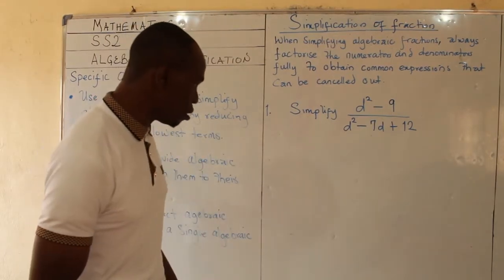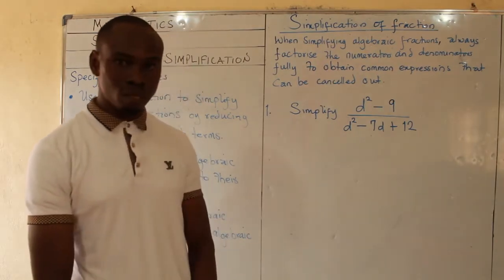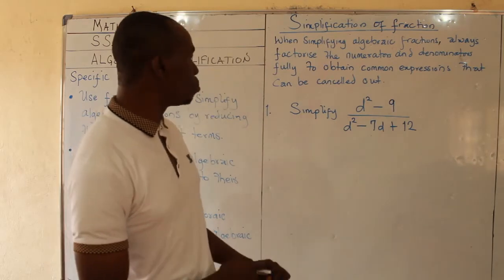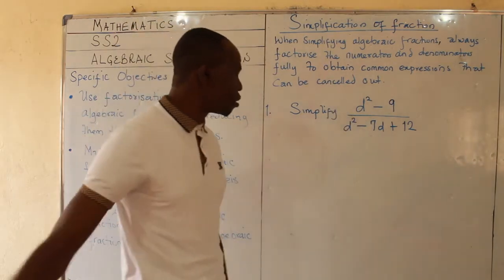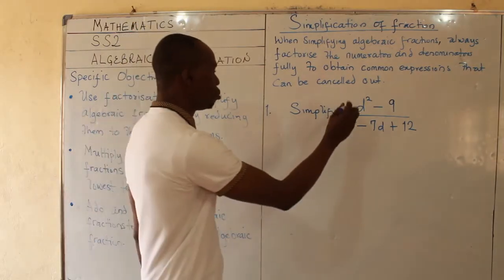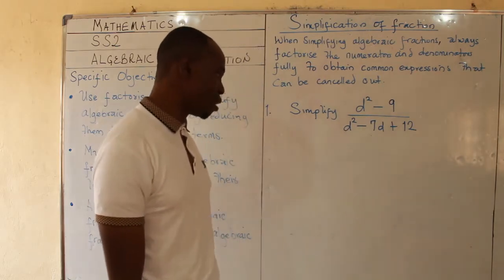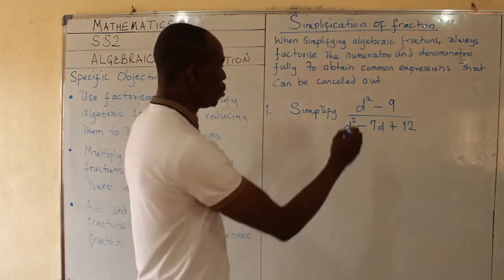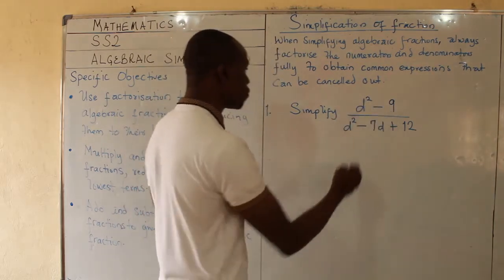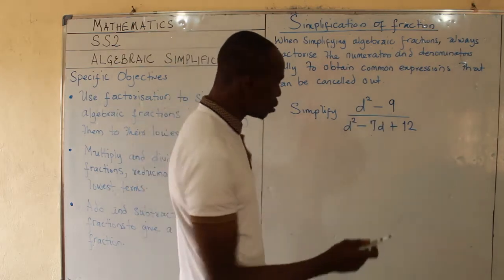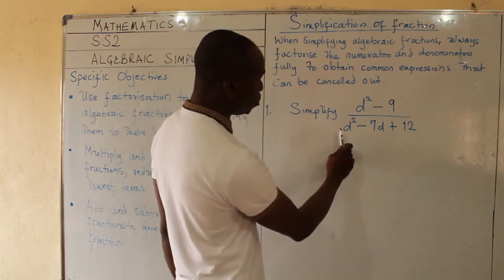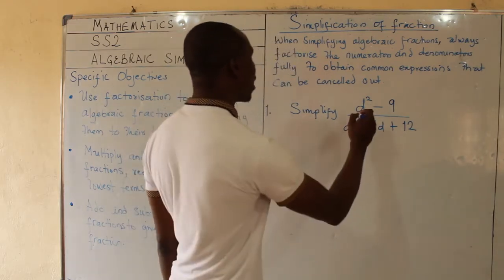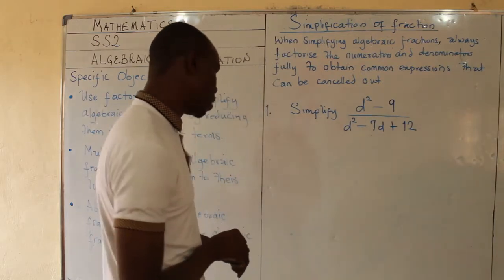For the first example, the question says simplify (d² - 9) all over (d² - 7d + 12). This is called an algebraic fraction because it has alphabets instead of numbers. I have to look closely at the numerator and observe that it is the difference of two perfect squares, d² and 9. The denominator is an algebraic expression: d² - 7d + 12.